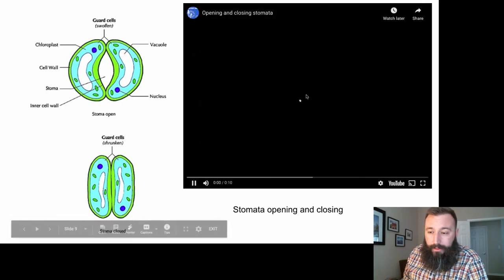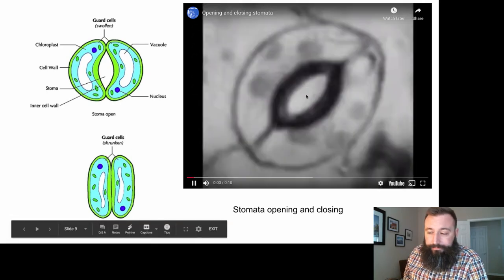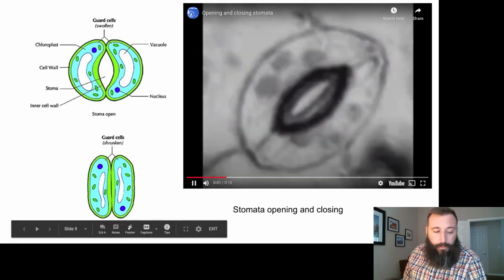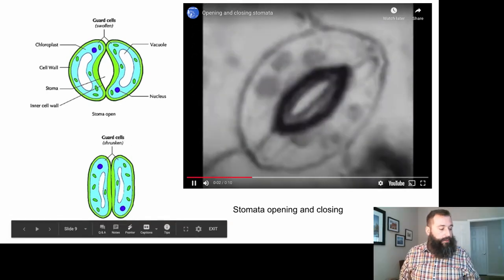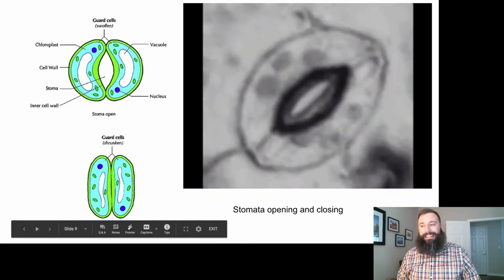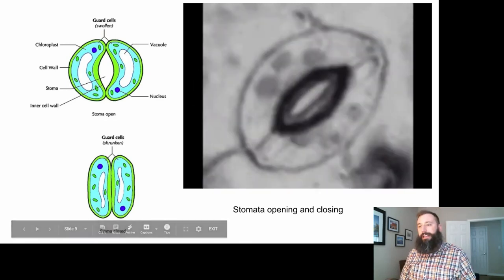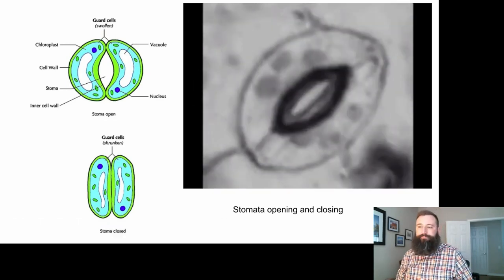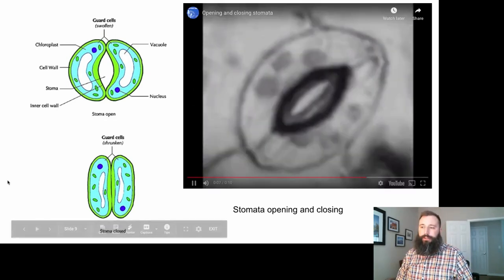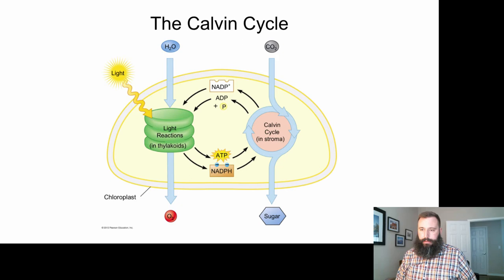There could be issues with that because CO2 is an ingredient required by the Calvin Cycle. Take a look at this video — you can see a stomata opening and closing. Pretty wild. Now let's talk about the Calvin Cycle.